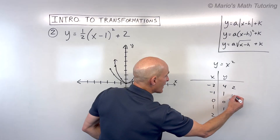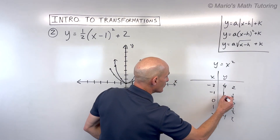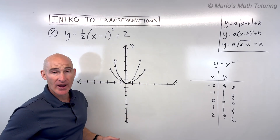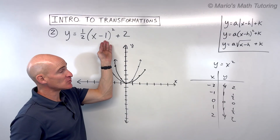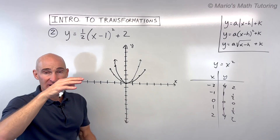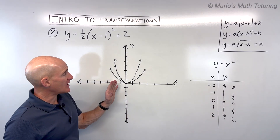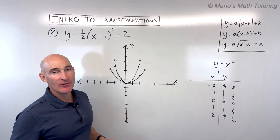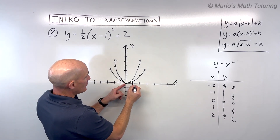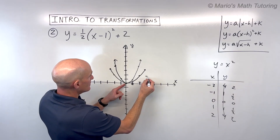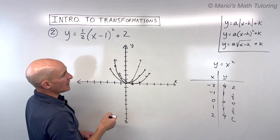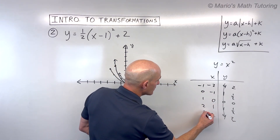If you want to use the table method, multiply the y values by a half and cross out the old ones. The minus one is grouped with the x — it's inside the parentheses — so it affects the x coordinates in the opposite way. Minus one is going to shift the graph positive one to the right. If it was plus one, it would go left one. Adding and subtracting is a rigid transformation — a shift — whereas multiplying or dividing is a stretch or shrink, which is non-rigid. So I'm going to add one to all the x coordinates and cross out the old ones.